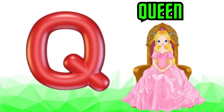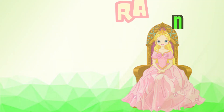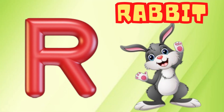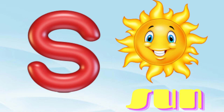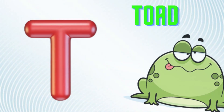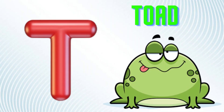Q is for Queen, Q-Q-Queen. R is for Rabbit, R-R-Rabbit. S is for Sun, S-S-Sun. T is for Toad, T-T-Toad.